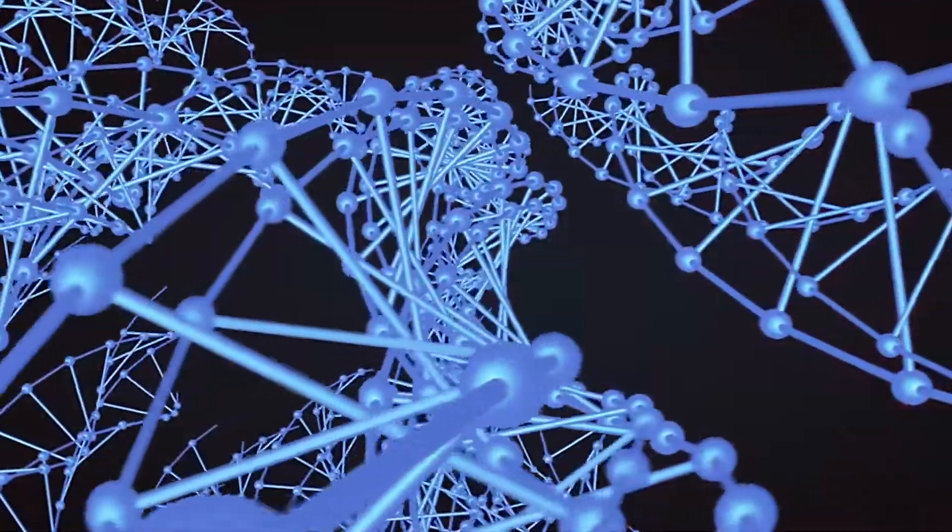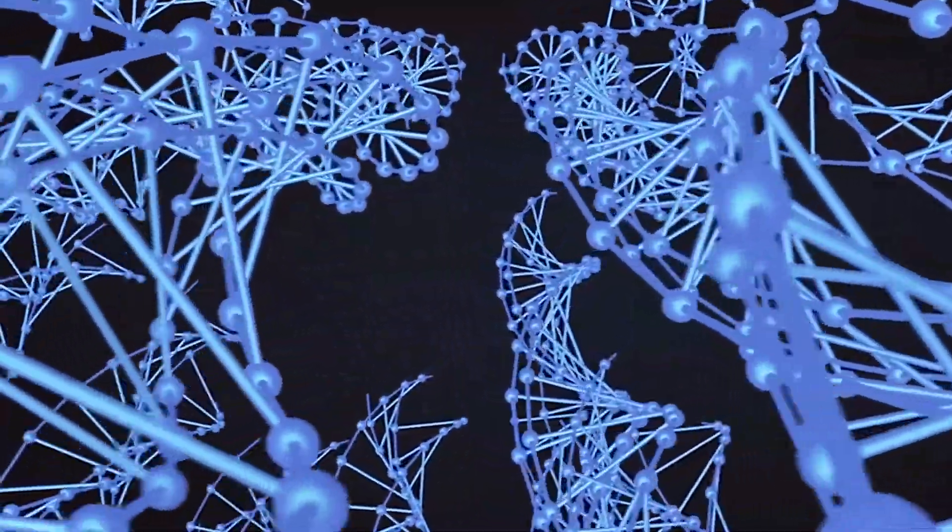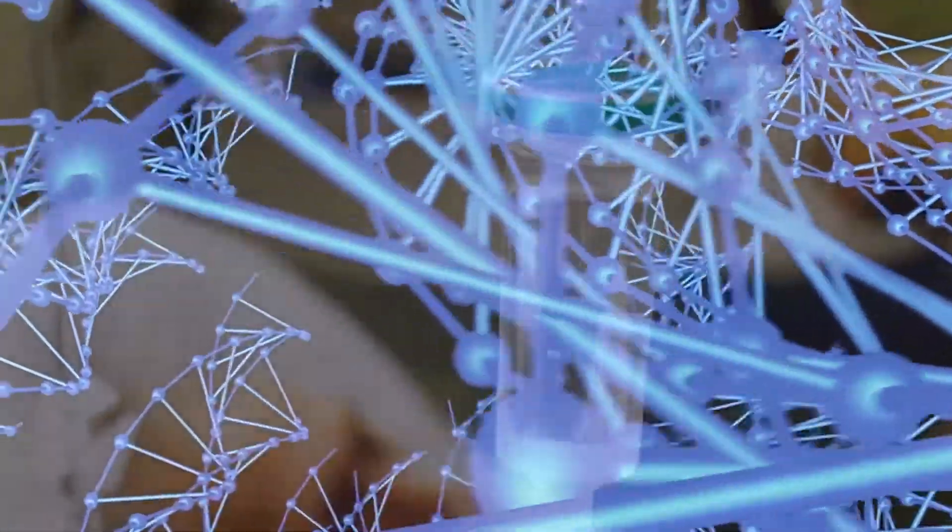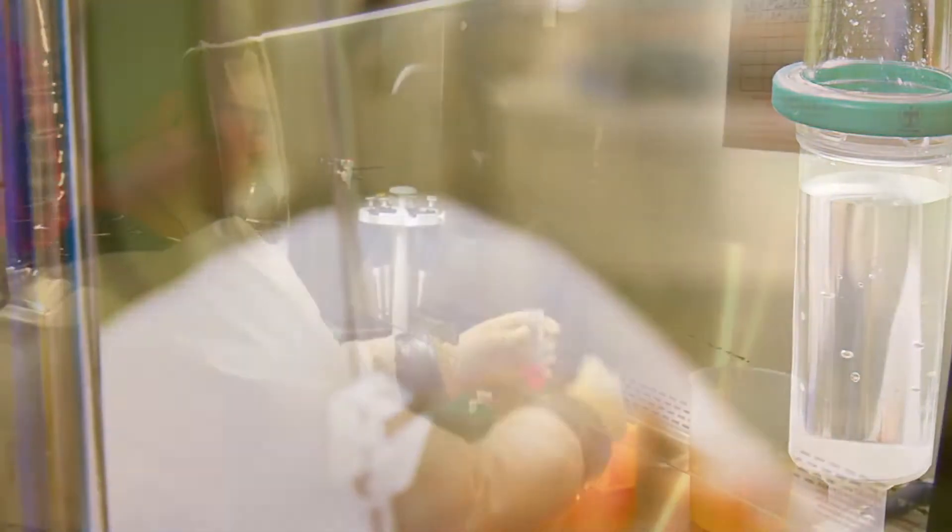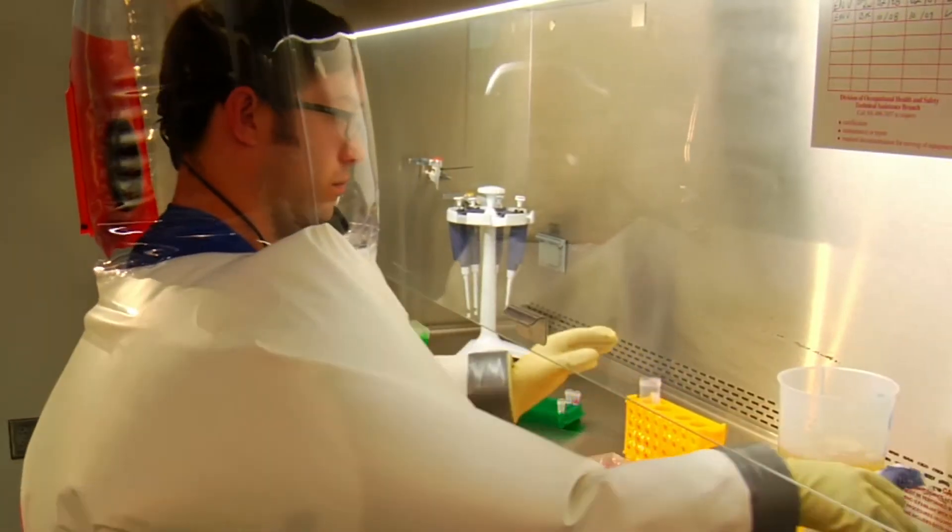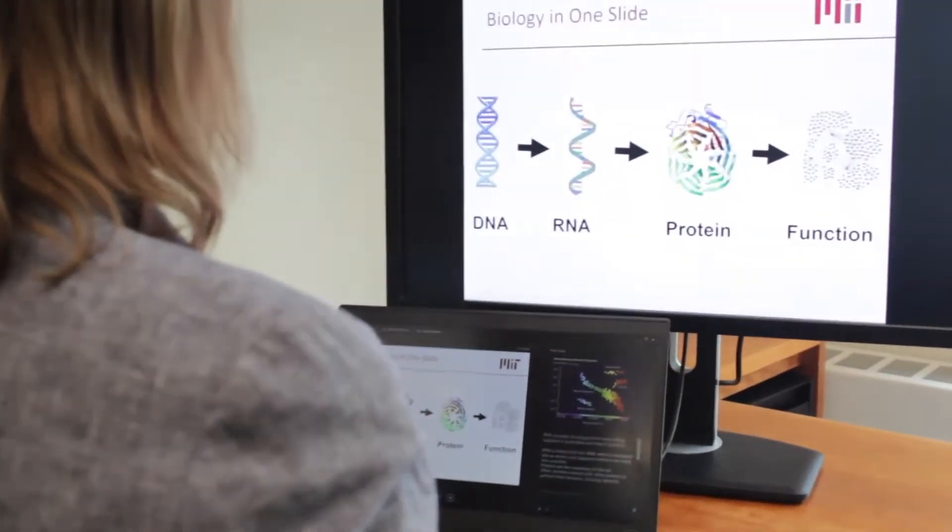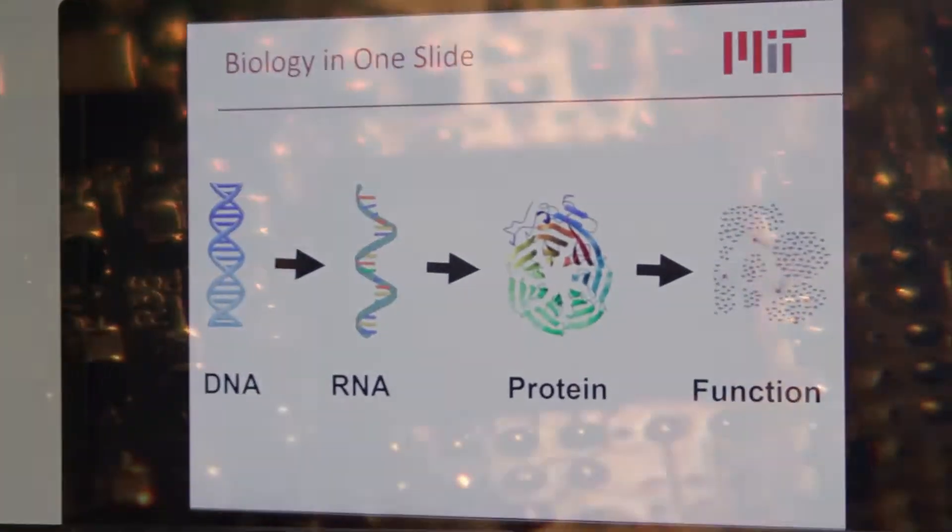The Human Genome Project showed us by mapping the 3 billion base pairs that comprise a person's complete DNA. The data hold secrets of why we fall prey to disease, and how, perhaps, to overcome it. But without clever approaches, cracking those secrets is beyond even our most powerful computers.